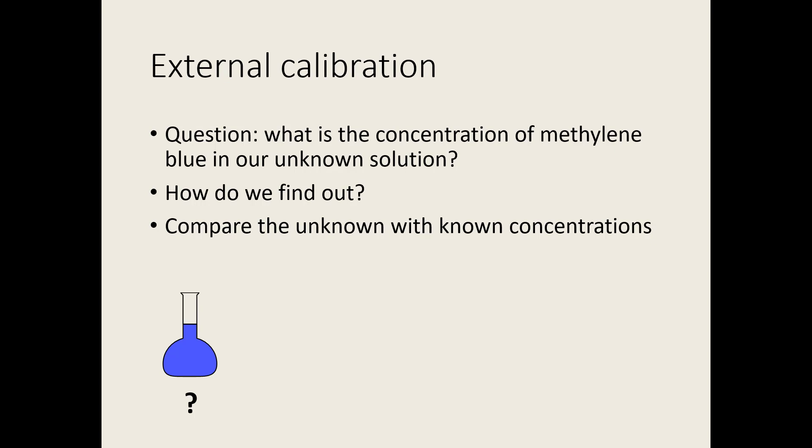The usual way to do this is to make up a series of solutions whose concentrations we know accurately and to compare them to our unknown sample using an appropriate analytical technique. That might be UV absorption, HPLC or GC peak areas or a number of other things. We can then work out the mathematical relationship between instrument response and concentration and use this to calculate our unknown concentration.